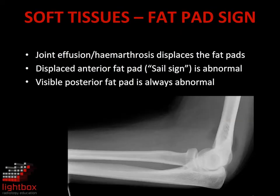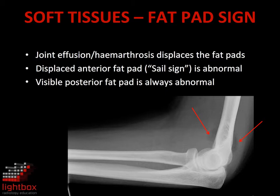Once the bones have been assessed, the soft tissues need to be evaluated to complete x-ray interpretation. Signs of a joint effusion or haemarthrosis are elevation of the anterior fat pad and visualisation of the posterior fat pad. The anterior fat pad is usually closely applied to the anterior cortex of the distal humerus. Elevation of the anterior fat pad is referred to as the sail sign, where the fat pad has the appearance of a mainsail on a yacht. The posterior fat pad should not be visualised in a normal radiograph, and its presence is diagnostic of a joint effusion or haemarthrosis.